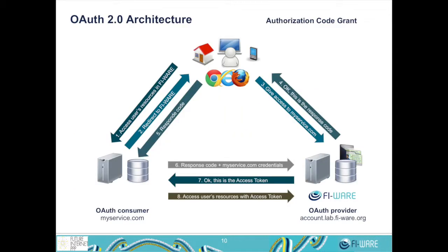In our previous class we saw the authorization code grant, which is based on browser redirections between our application and the FIWARE account system. We told our application to redirect the user's browser to the FIWARE account to authenticate him. Once he was authenticated, the FIWARE account redirected him back to our callback URL, in which we obtained the response code, and with this response code we made a request to the FIWARE account system to obtain the access token.